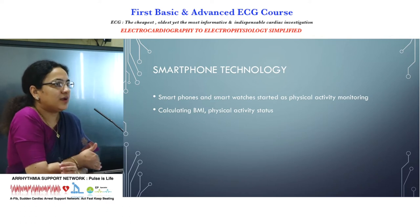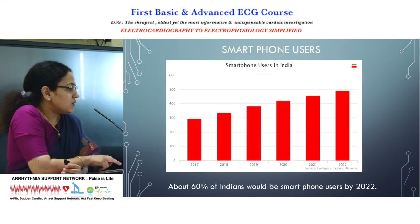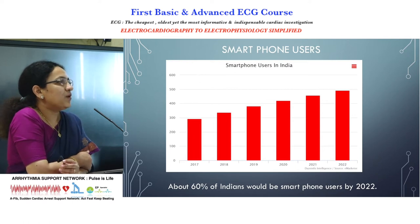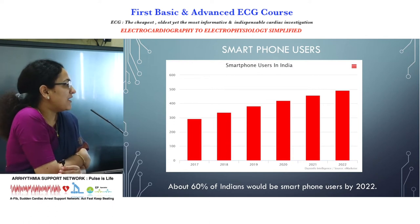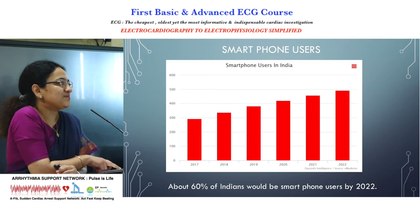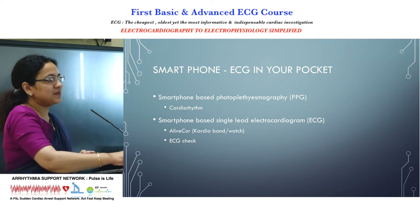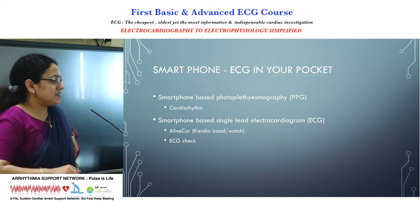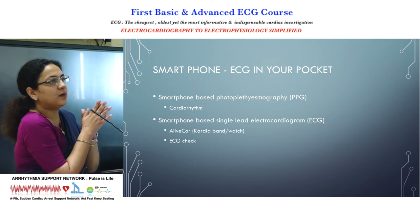Regarding the Indian population and smartphone feasibility, it was very interesting that 60% of the Indian population had smartphones by 2022 — more than toilet facility access. So we are more smartphone savvy now. Two smartphone-based principles emerged: smartphone photo plethysmography, developed by CardioRedoon, and smartphone-based single-lead ECG, developed by LifeCore or ECG Check.